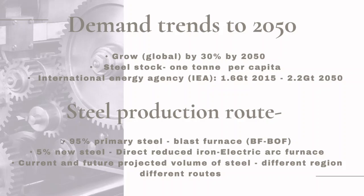Today, about 95% of primary steel is produced in blast furnaces, which use coking coal, and only 5% of new steel is produced by direct reduction of iron combined with electric arc furnace, which uses syngas. As it is estimated that in the future there will be more production using secondary steel, current and future volume of production depends on different reasons and routes.